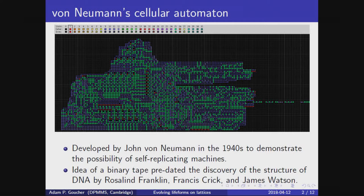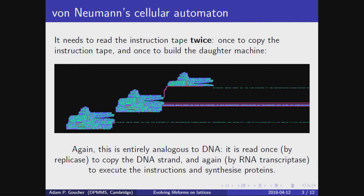Arguably, that's optimal because it's the closest integer to e. We managed to optimize the tape down to just 8,920 ternary digits long. Just to reiterate, the tape is read twice, to both copy and execute the instructions.